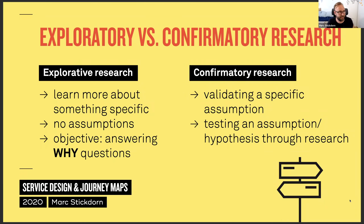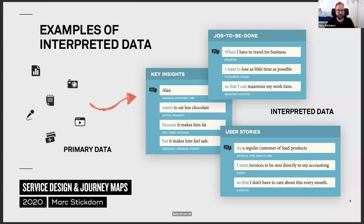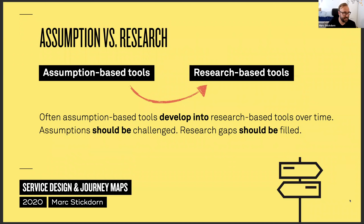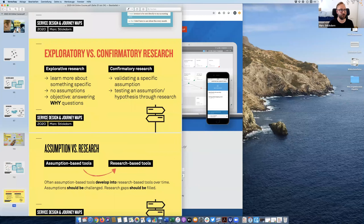When we go out we often start with explorative research — we want to learn something new and get answers, ideally going out without assumptions and with an open mind. Once you have interpreted data, key insights, and jobs to be done, you might do confirmatory research — perhaps quantitative research to confirm what you've learned. That's optional. What you do need to do is whenever you work with tools like journey maps and start assumption-based, you must do research to ground them, because making decisions based on assumptions alone is very dangerous.